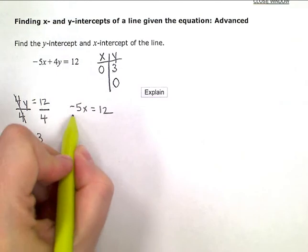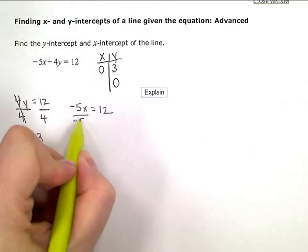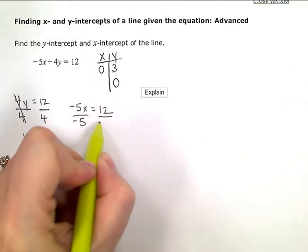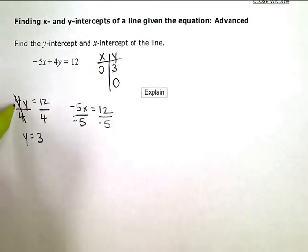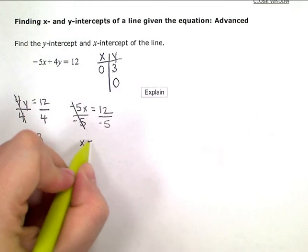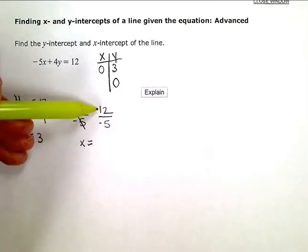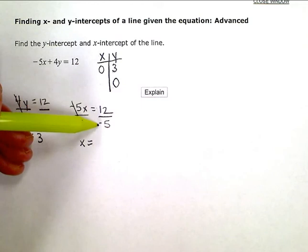If I try to divide, or you may not be able to do this one in your head as easily as this one over here. If I divide out by negative 5, my x is equal to this fraction, 12 over negative 5.